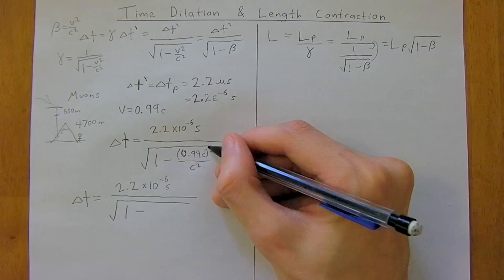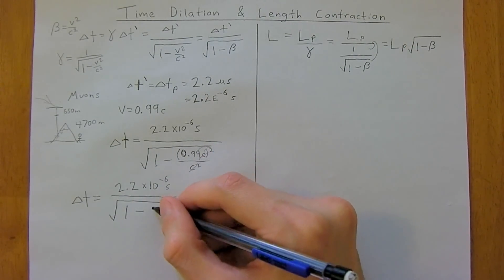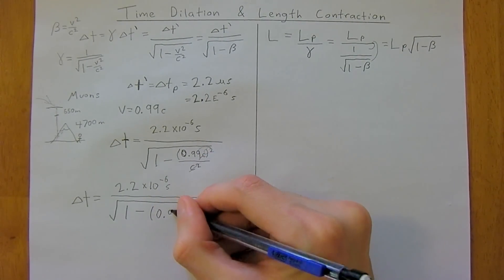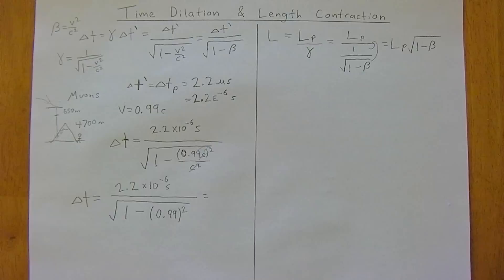well, this is going to be c squared and 0.99 squared, so the c's will cancel. So, we're going to be left with 0.99 squared. So, let's put this into our calculator now,